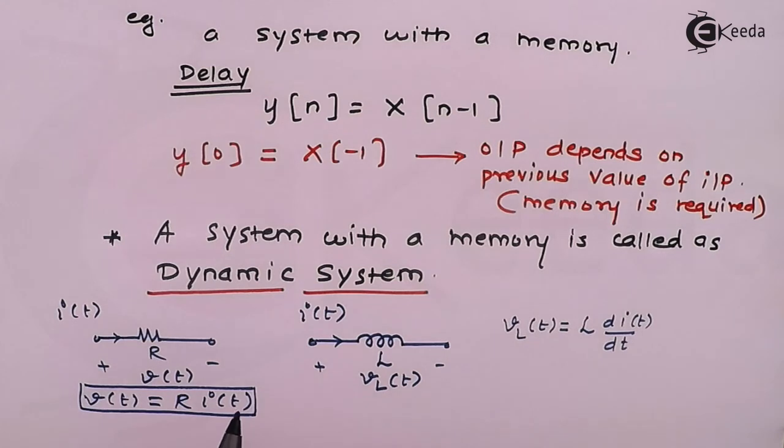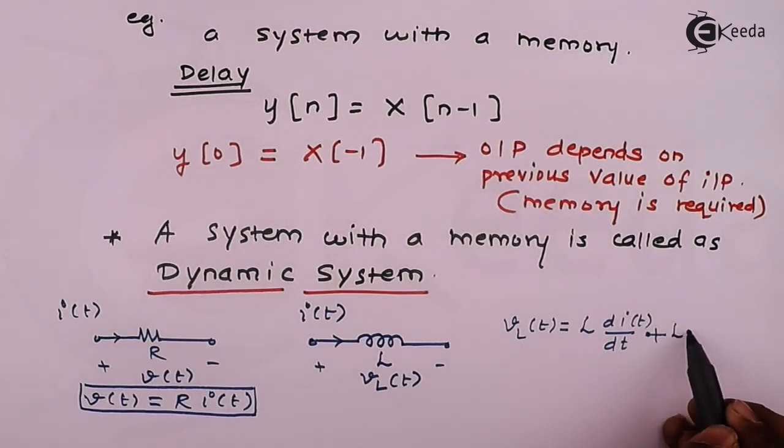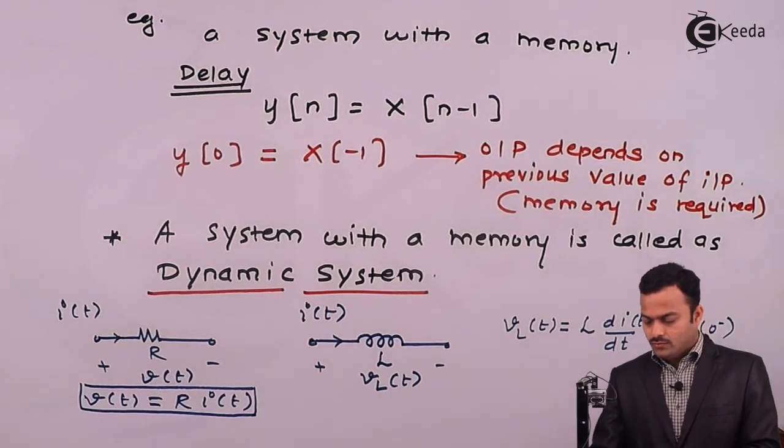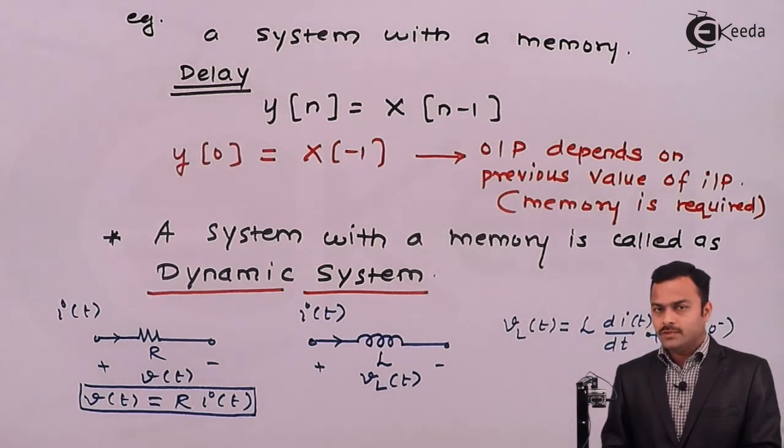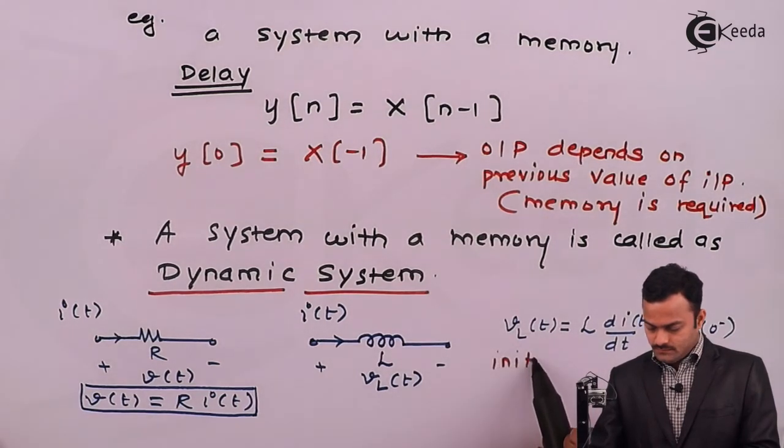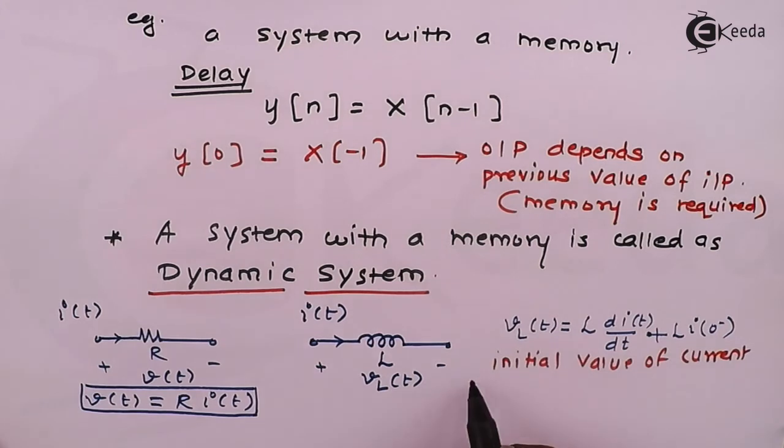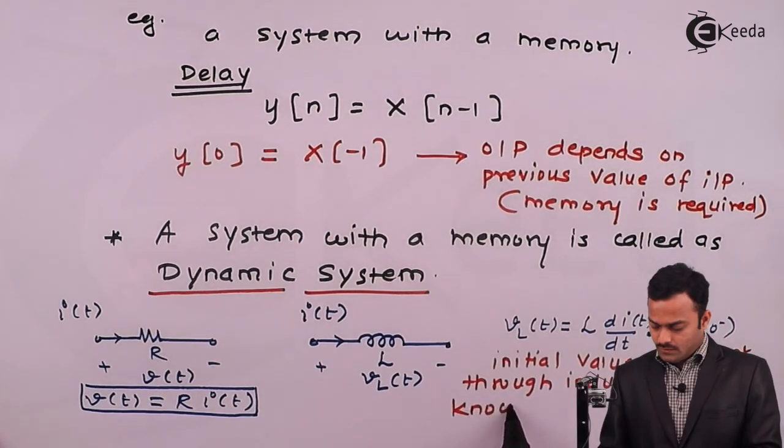But one more thing I need to know is that I should know what is the initial value of inductor current, meaning the exact equation will be L into I0. In order to know the voltage of inductor I need to know what is the current flowing before switching this inductor, that means the initial value of the current flowing through the inductor should be known.